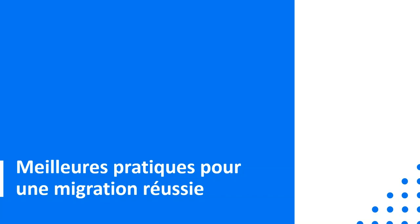L'objet de la présentation est de vous préciser comment sont menés les projets de transition de l'héritage ALM — ALM.NET comme on va l'appeler au cours de la présentation — vers ALM Octane, qui est la nouvelle solution plus orientée agile, mais intégrant aussi des projets en mode hybride.